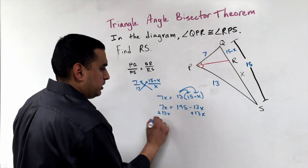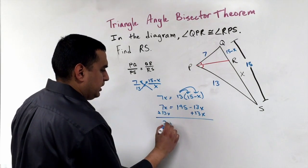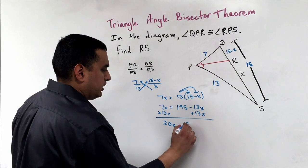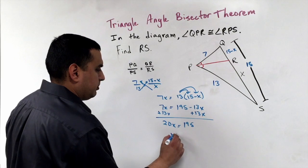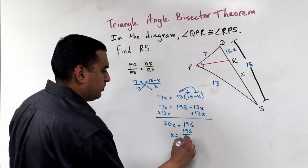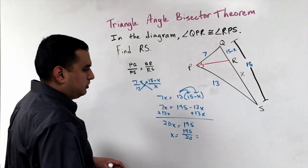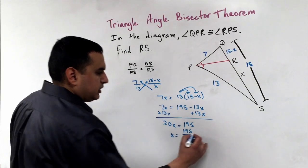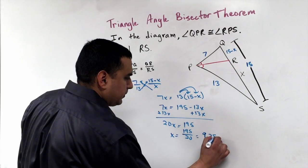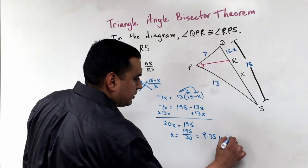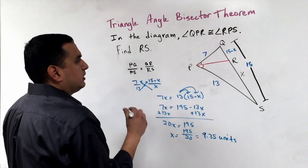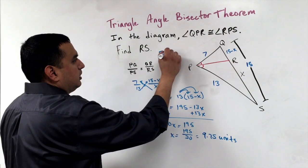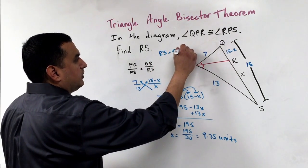that tells me X is going to be equal to 195 over 20. If I divide that, I get that X is 9.75 units, which is my RS here. So RS is equal to 9.75.